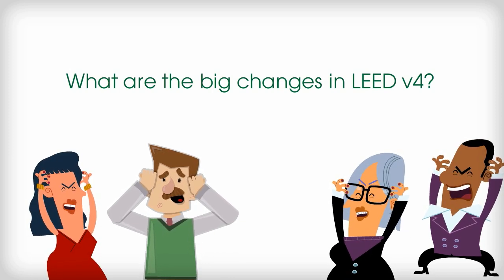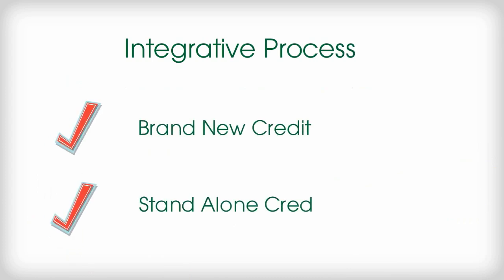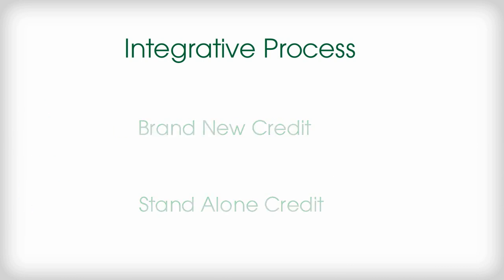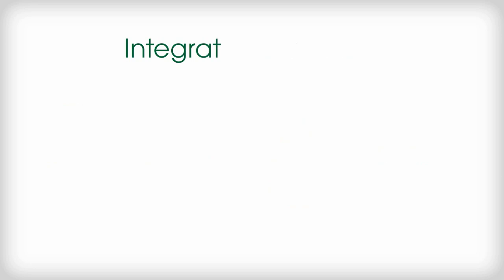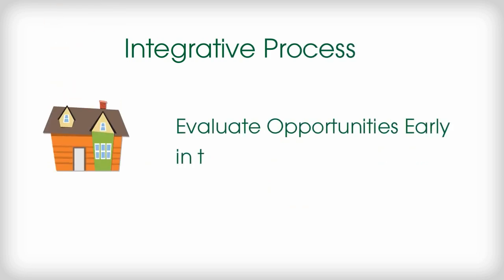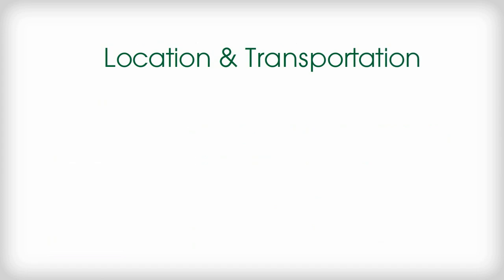So what are the big changes in LEED Version 4? Some of the most significant changes for the building design and construction rating system include the Integrative Process — a brand new credit that stands alone and has no category. The credit encourages analysis of energy and water systems to inform design. It requires project teams to evaluate their opportunities early in design, before major decisions have been made and before cost-effective options are eliminated.